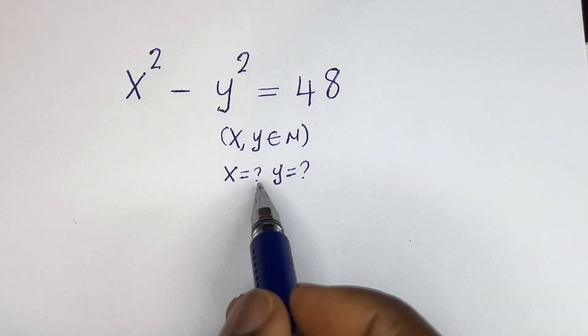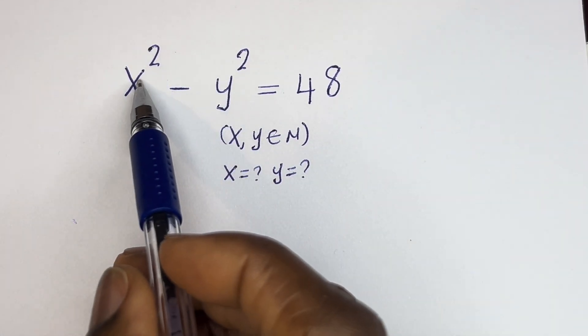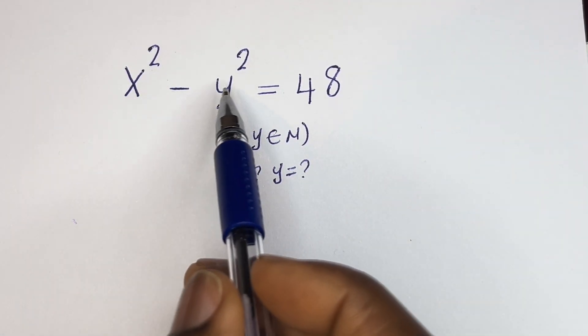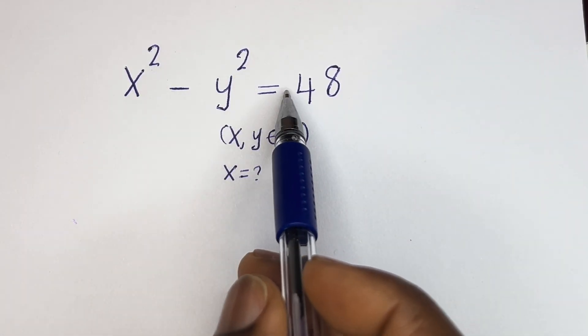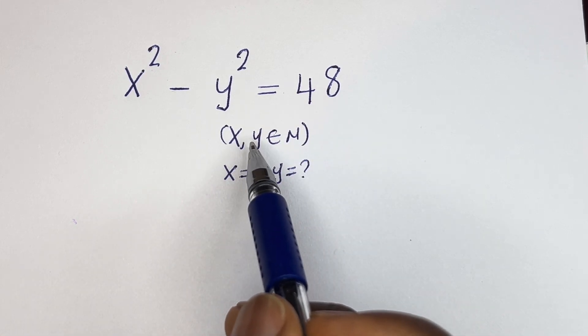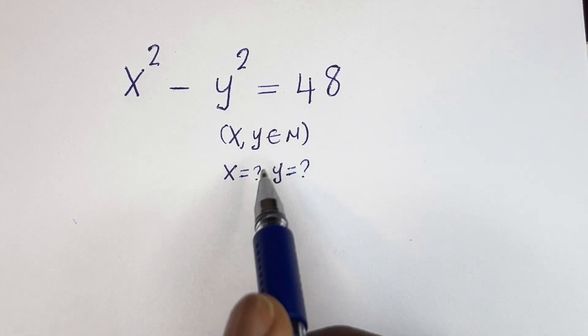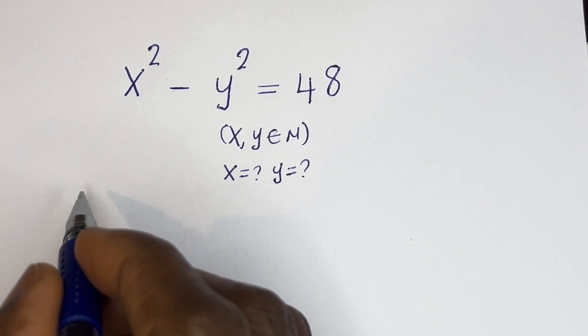Hello. How to solve for S and Y in this equation: S squared minus Y squared is equal to 48, where S and Y are members of the natural numbers.